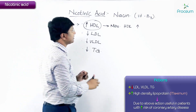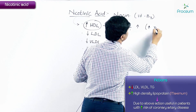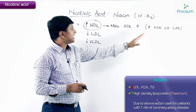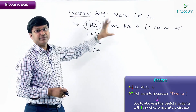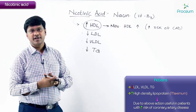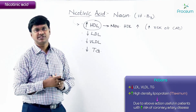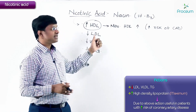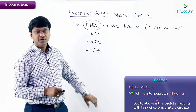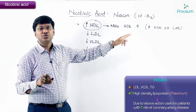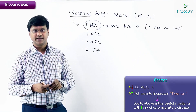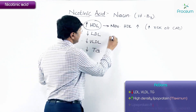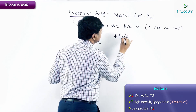Therefore, niacin is useful in patients who are having an increased risk of coronary artery disease. In coronary artery disease, one of the major risk factors is a decrease in HDL levels. Since niacin increases HDL, it can be used in those individuals who have an increased risk of coronary artery disease.